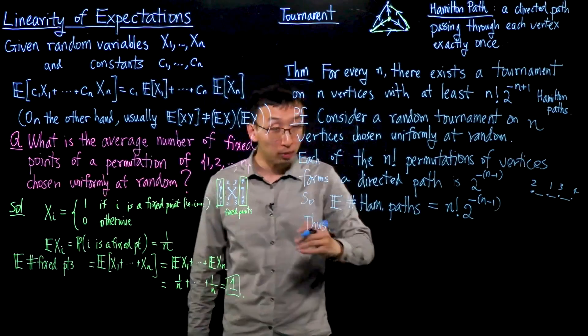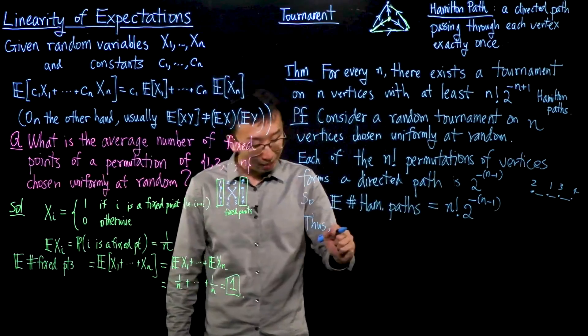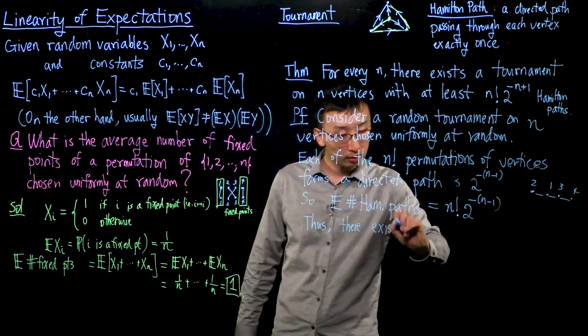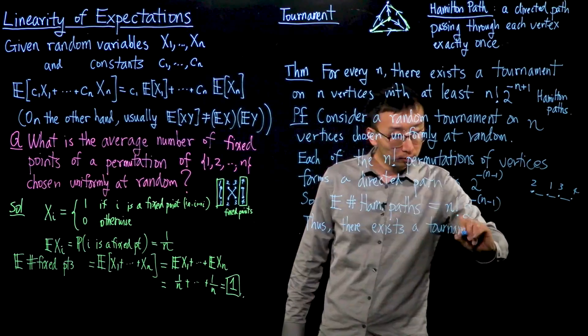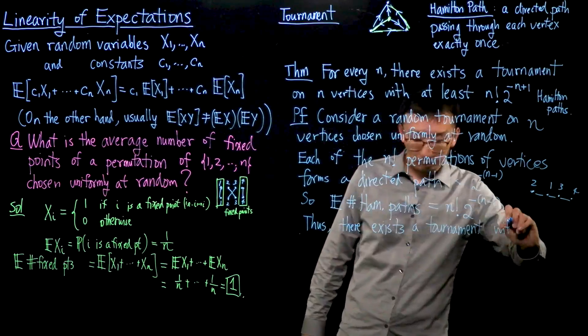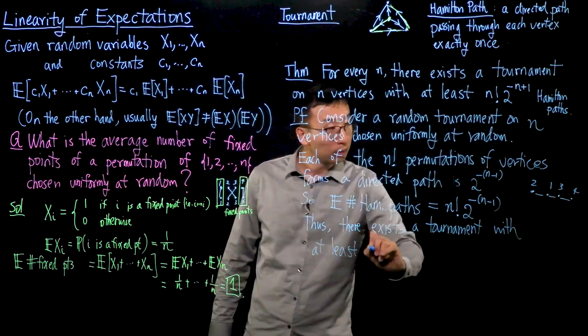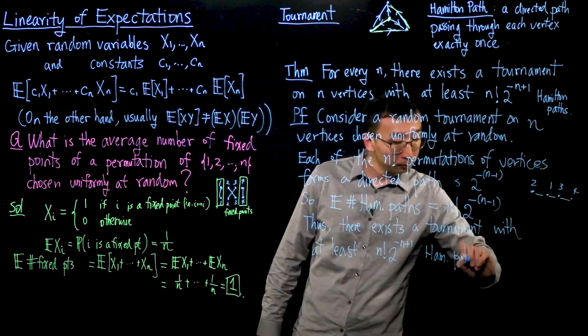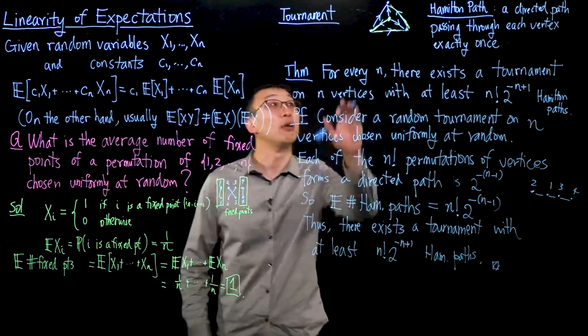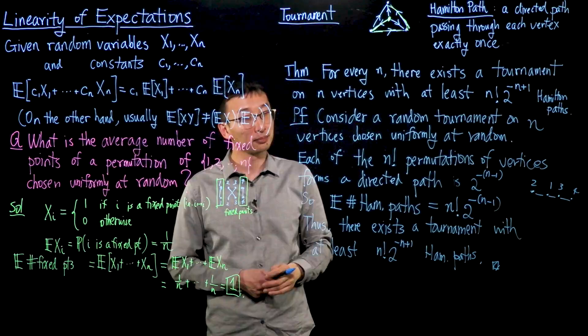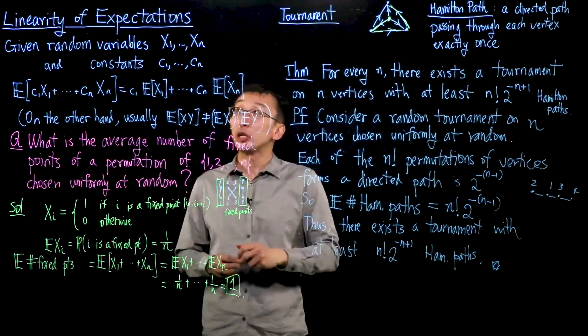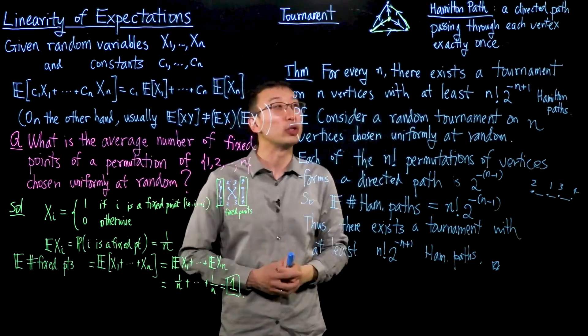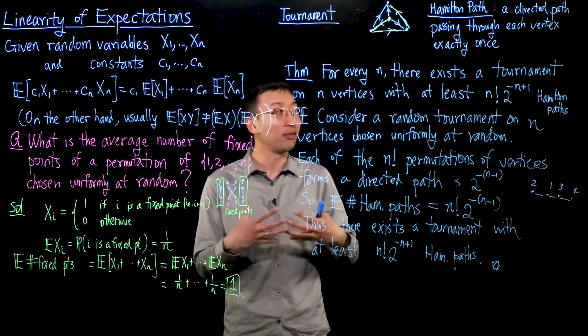And thus, there must be some instance where we can beat this average or be at least as large as this average. So thus, there exists a tournament with at least this many Hamilton paths. And that concludes the proof of this theorem that we laid out earlier. So this is an example of applying linearity of expectations as a step in the probabilistic method to prove this nice and simple result that there exist tournaments with lots of Hamilton paths.